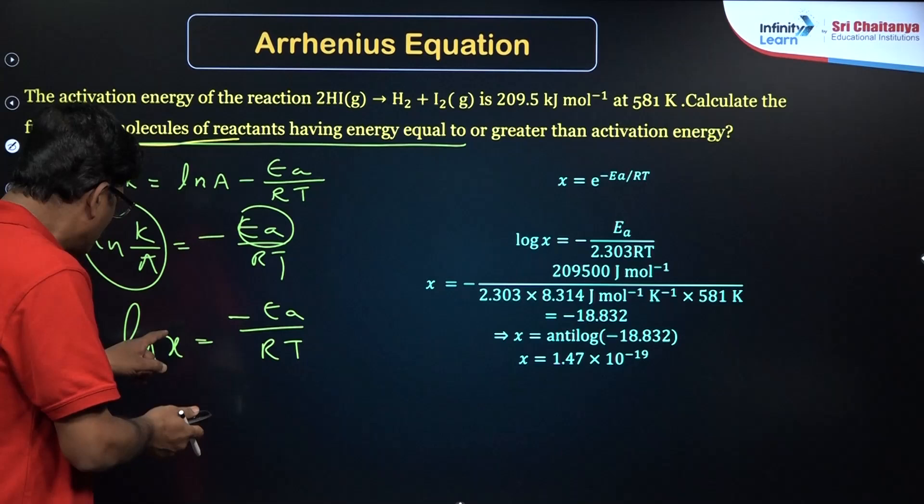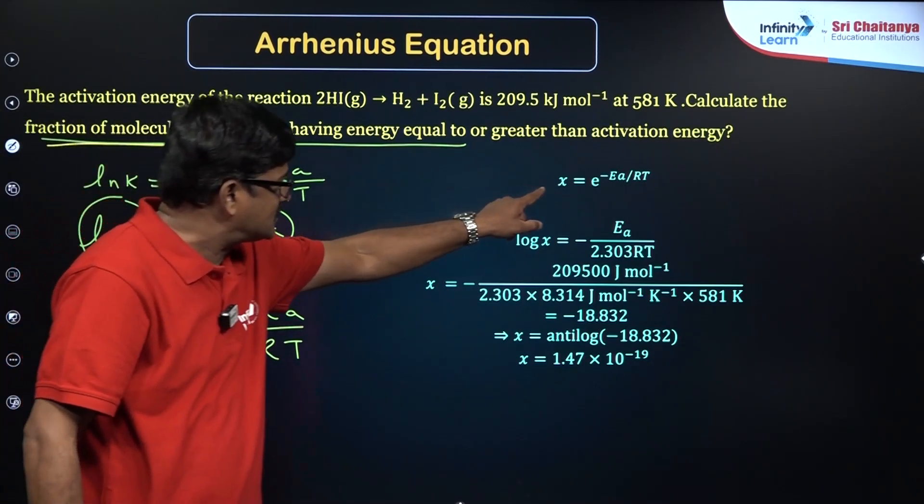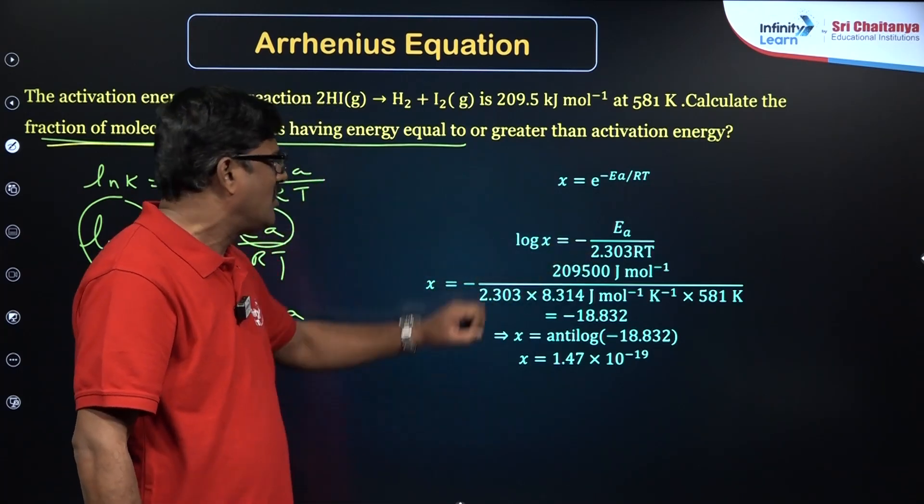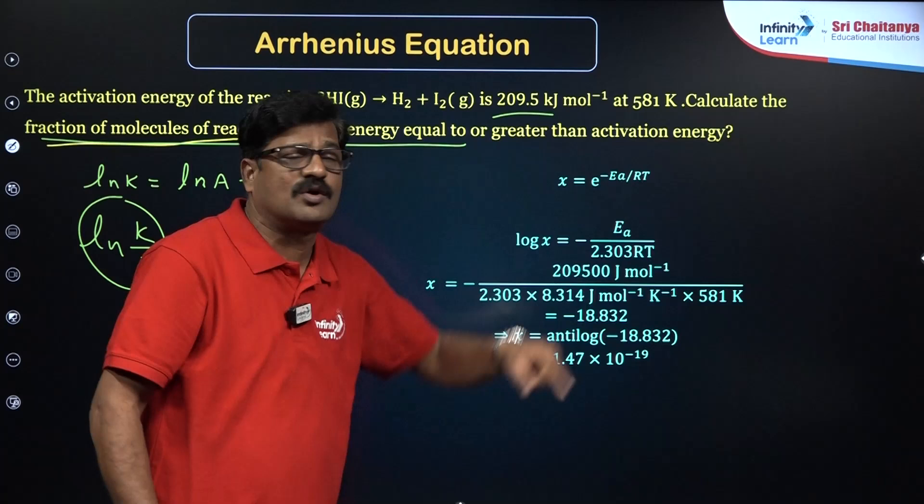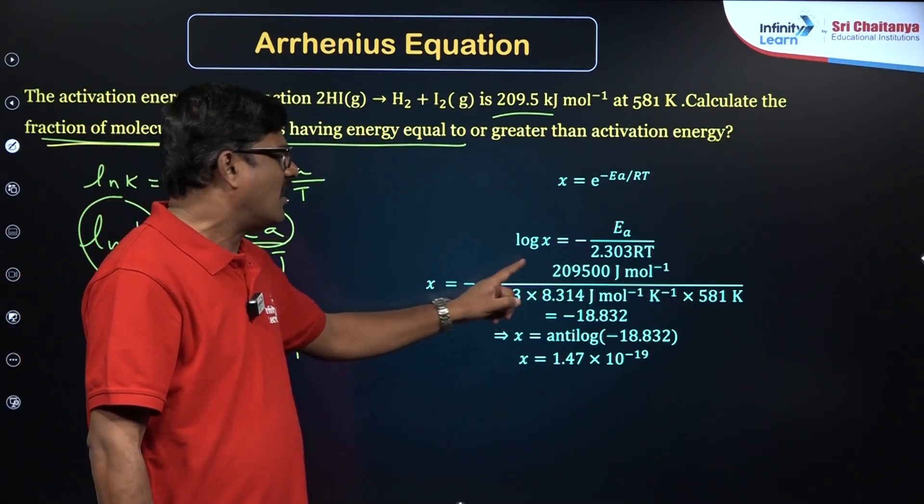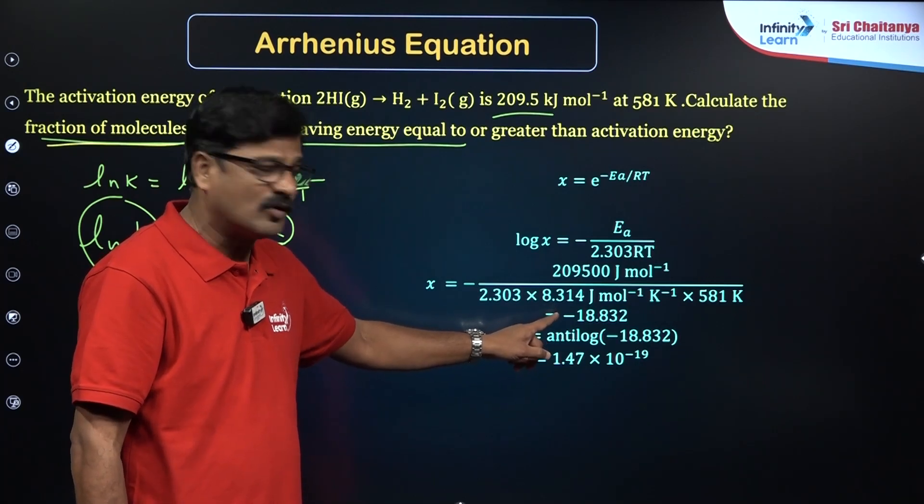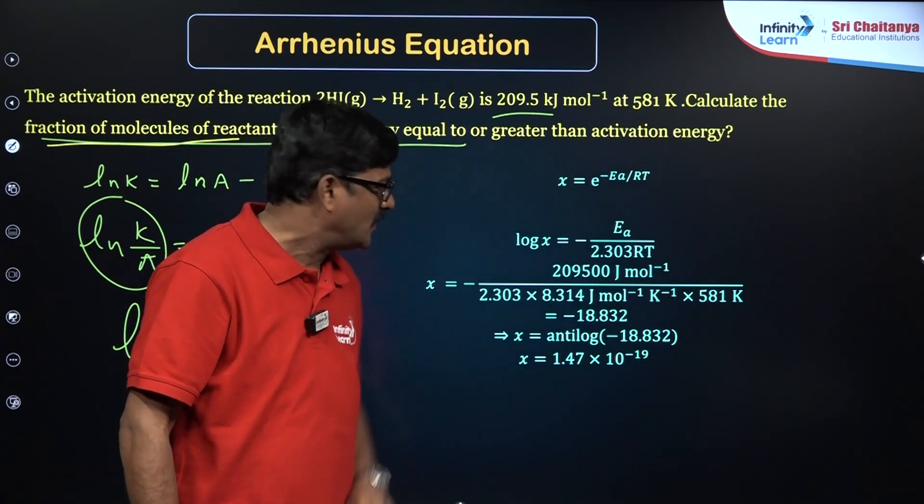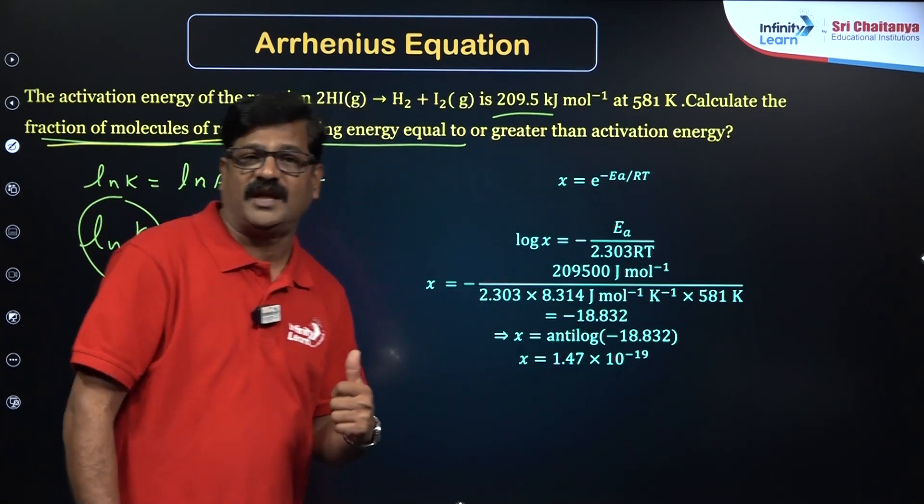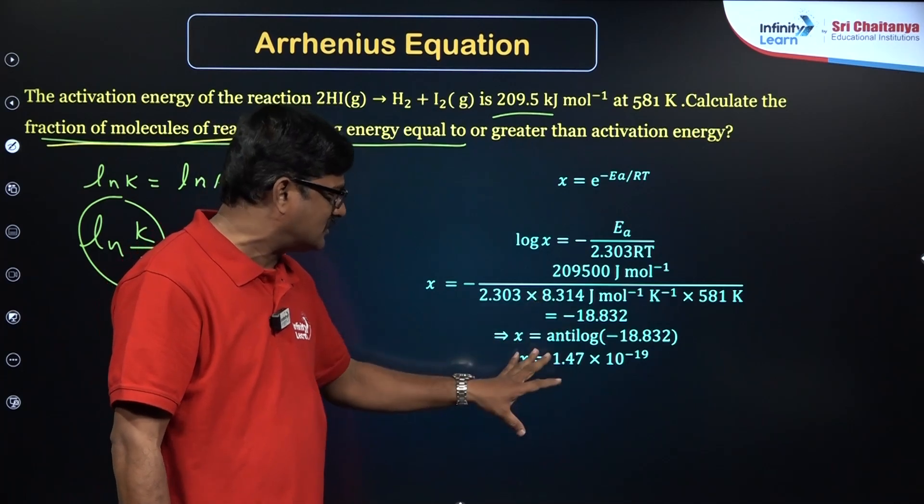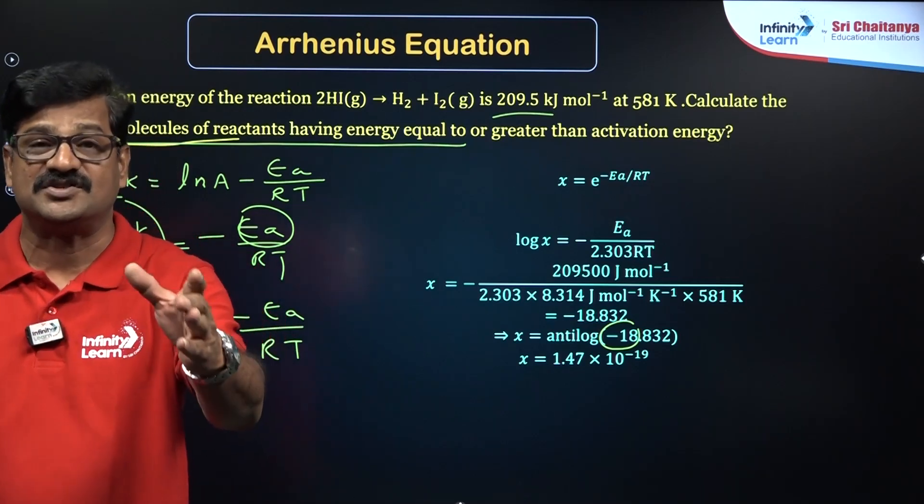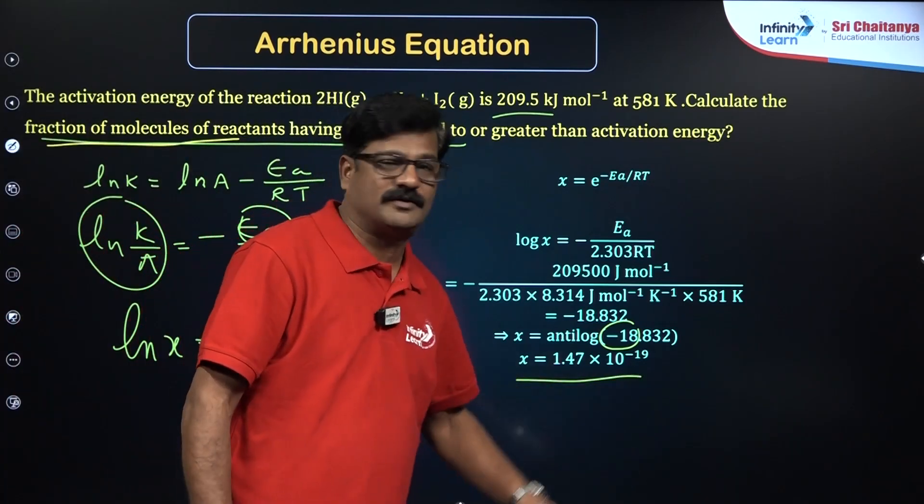This is one model. You just solve for the x value. x = e^(-Ea/RT), so log x = -Ea/(2.303RT). Put all the values. Activation energy is given as 209.5 × 1000, and 2.303, R value use 8.31, temperature 581 given in the question. If you solve it, you are going to get log x = -18.8, and taking the antilogarithm for that, it is going to be 10^(-19). That is the fraction of molecules.